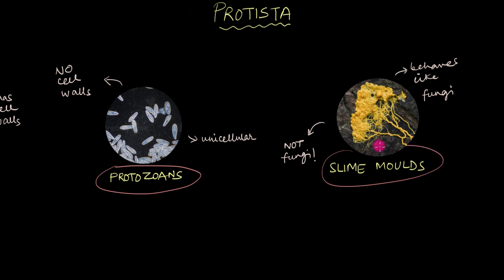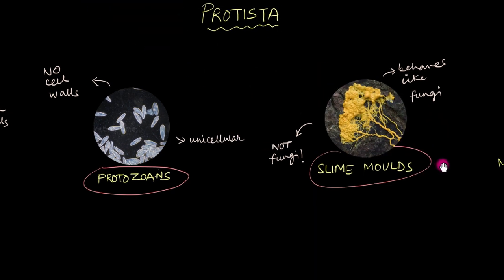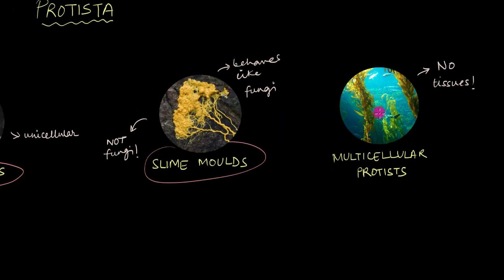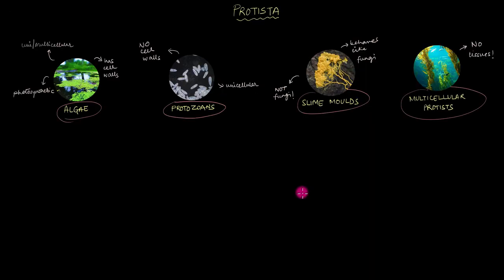Then there are some protists which look and behave like fungi even though they are not actually fungi, like the slime molds right over here. And you will notice that the multicellular protists have no tissue organization, meaning that the cells in these organisms are not organized into tissues. So you see — diverse, different sets of characteristics for different groups of protists.